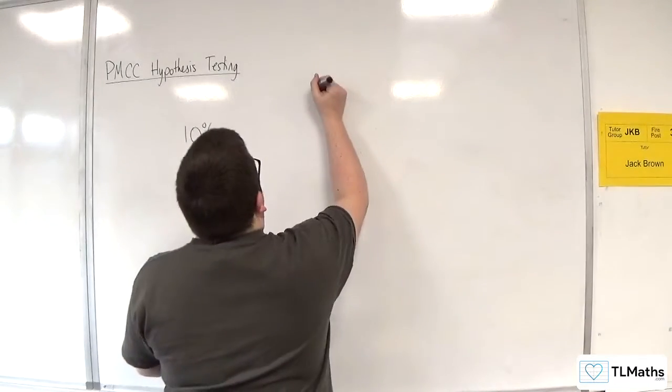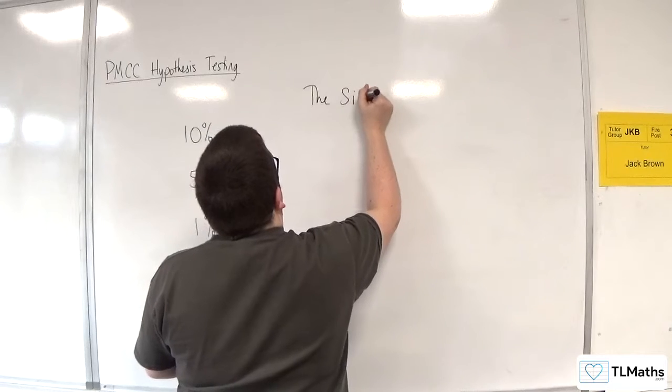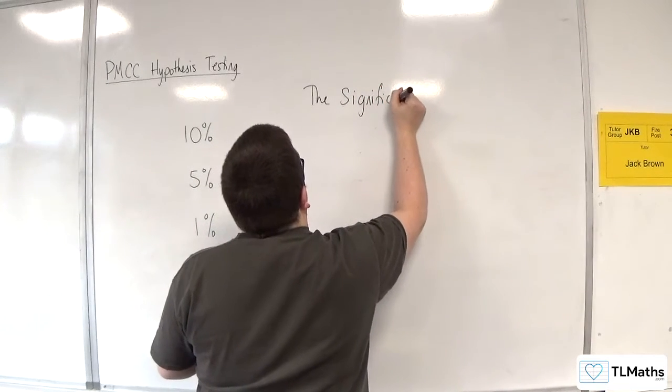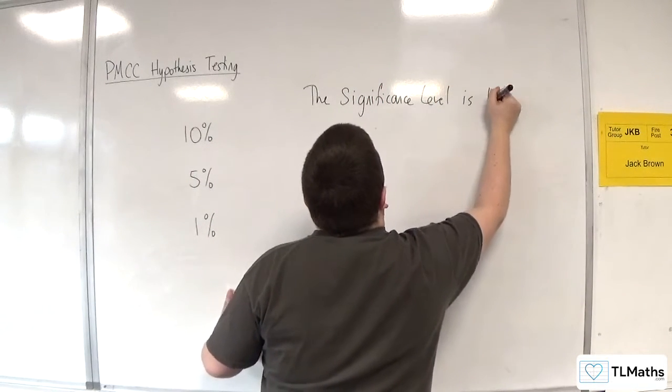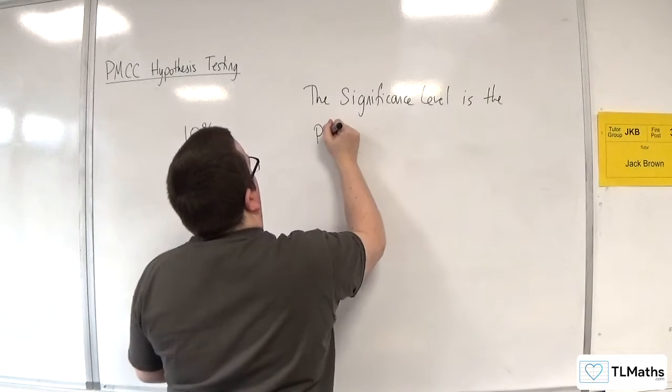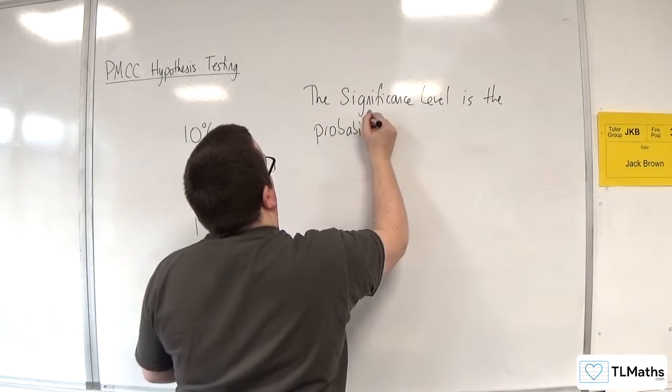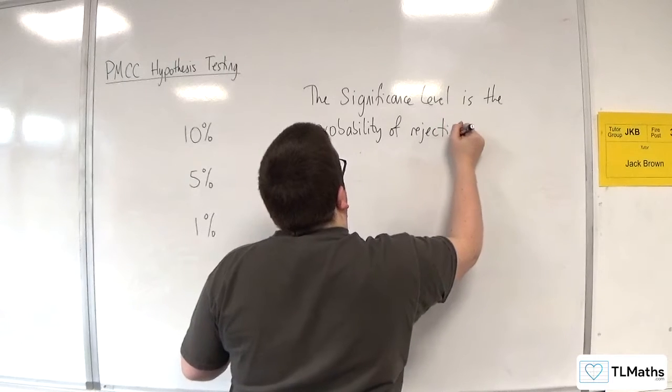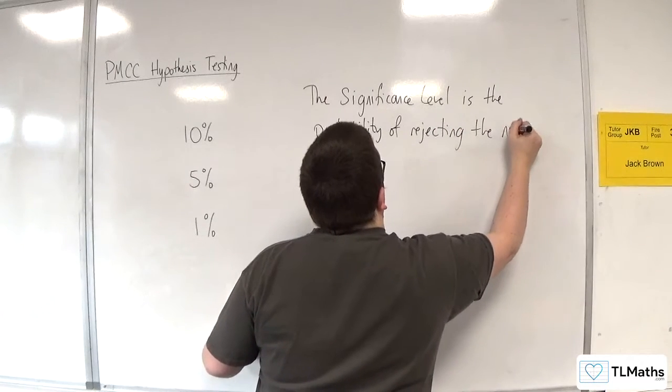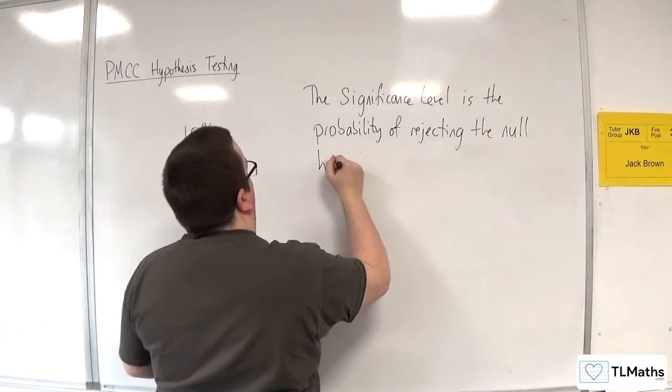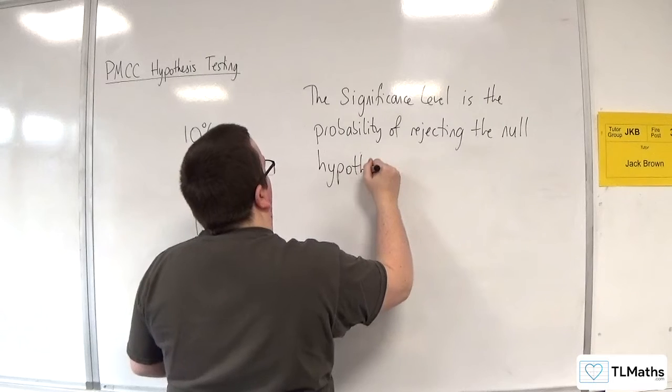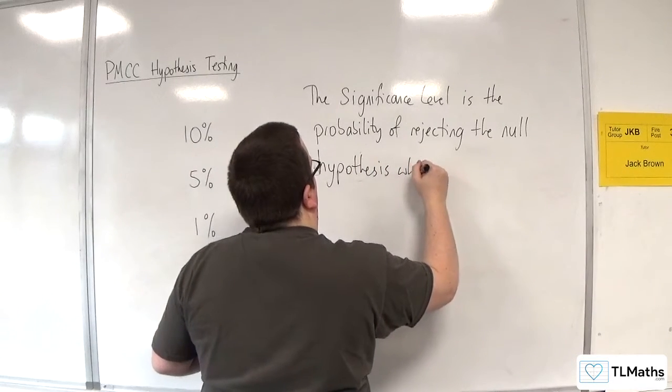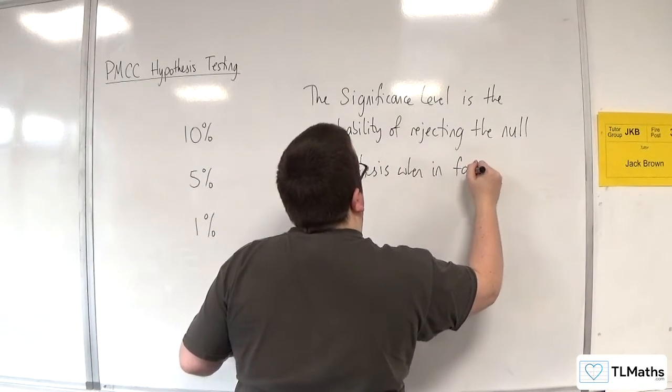The significance level is the probability of rejecting the null hypothesis when, in fact, it is true.